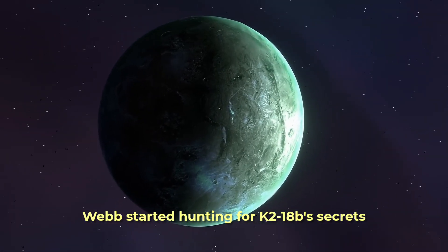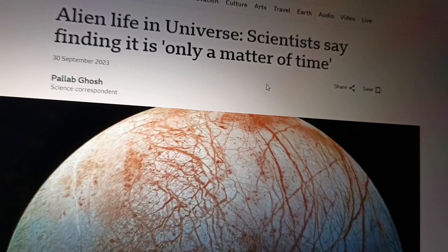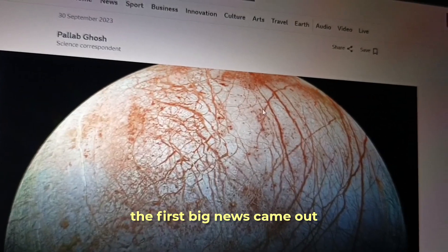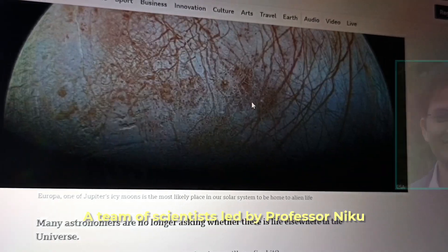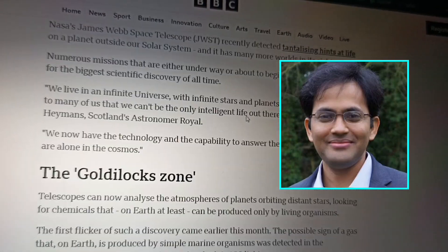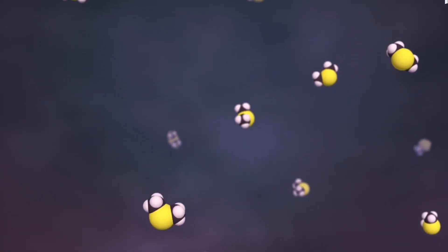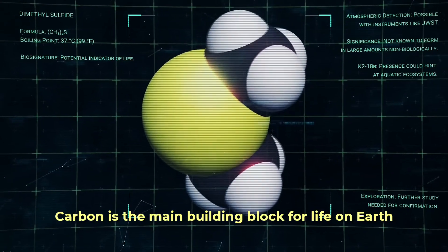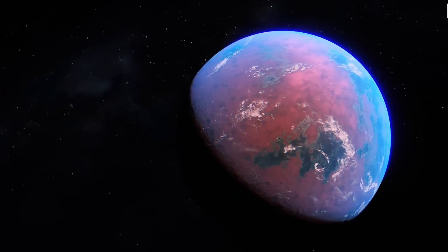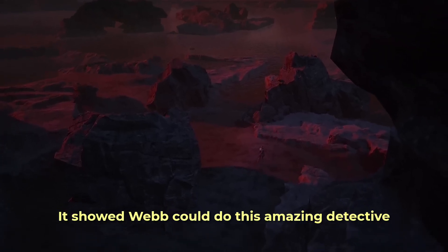Webb started hunting for K2-18b's secrets. What did Webb find hiding in that alien air? In 2023, the first big news came out. A team of scientists, led by Professor Nikku Madhusudhan, used Webb to look at K2-18b's air, and they found stuff. Webb clearly saw the barcodes for carbon dioxide, CO2, and methane, CH4. Finding these was a big deal. Carbon is the main building block for life on Earth. Finding gases with carbon in them on a planet in the habitable zone was super exciting. It showed Webb could do this amazing detective work so far away.